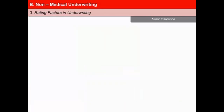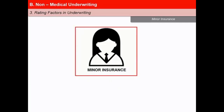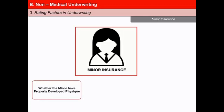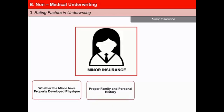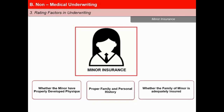Minors have no contracting power of their own, hence a proposal on behalf of a minor has to be submitted by a parent or legal guardian. Three conditions would generally be sought while considering insurance for minors. First, whether they have a properly developed physique, as poor growth can arise from malnutrition or other health problems. Second, proper family history and personal history — if there are adverse indicators, it may pose risks. And third, whether the family is adequately insured, as insurance of minors is generally pursued by families having a culture of insurance.